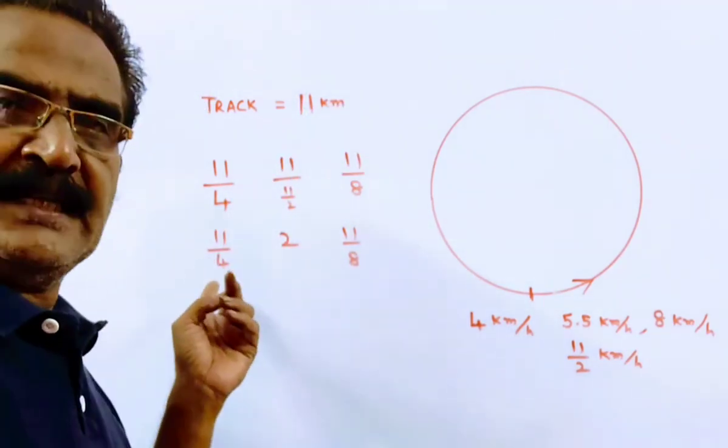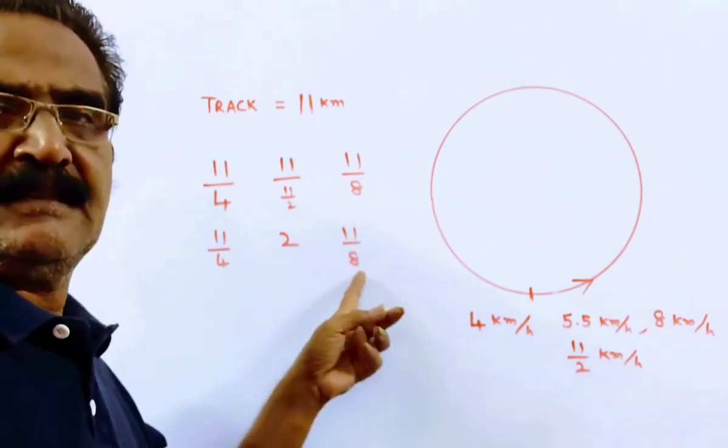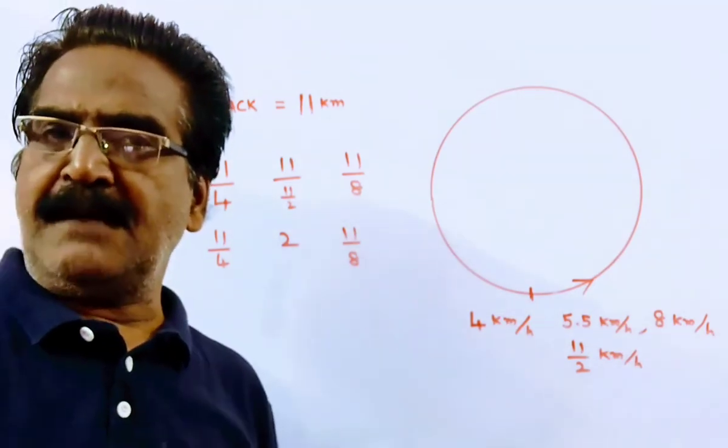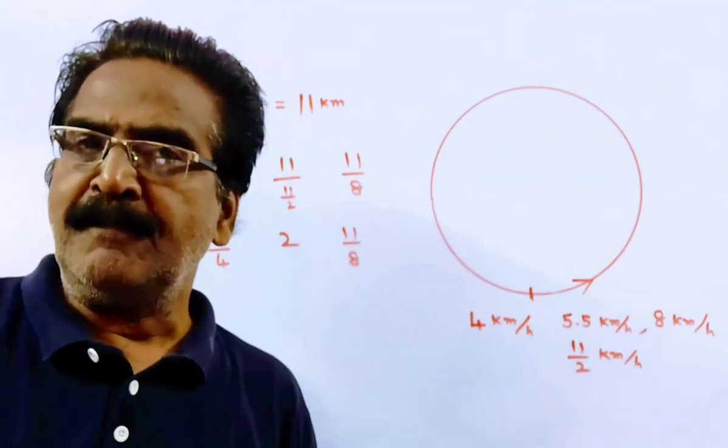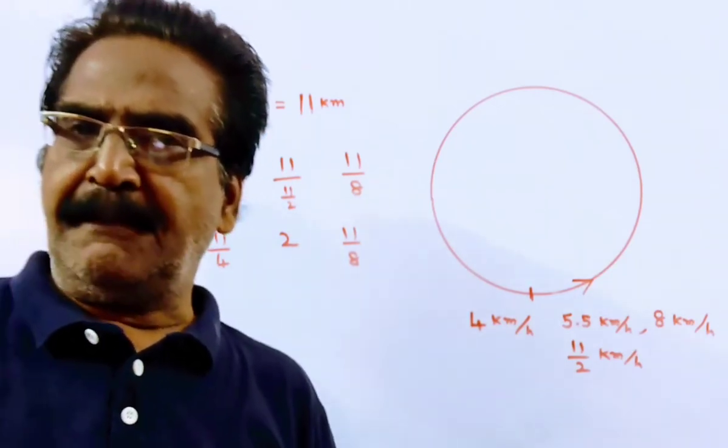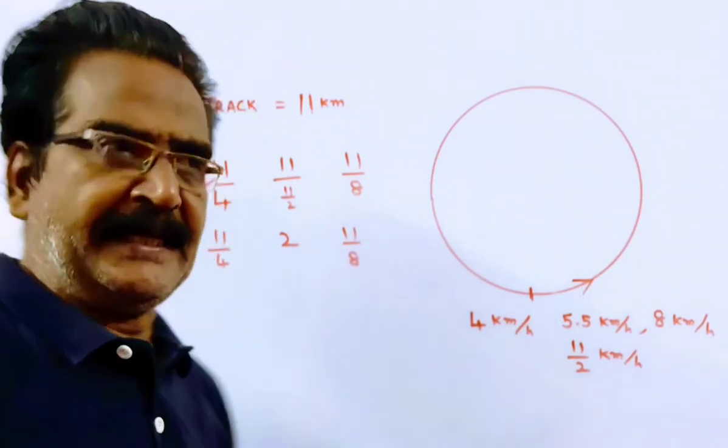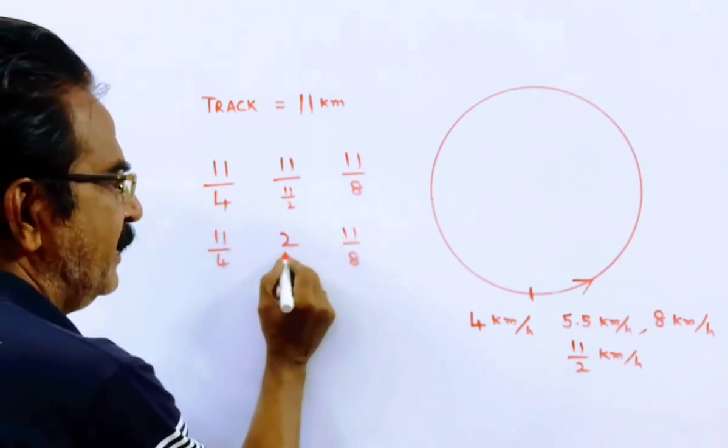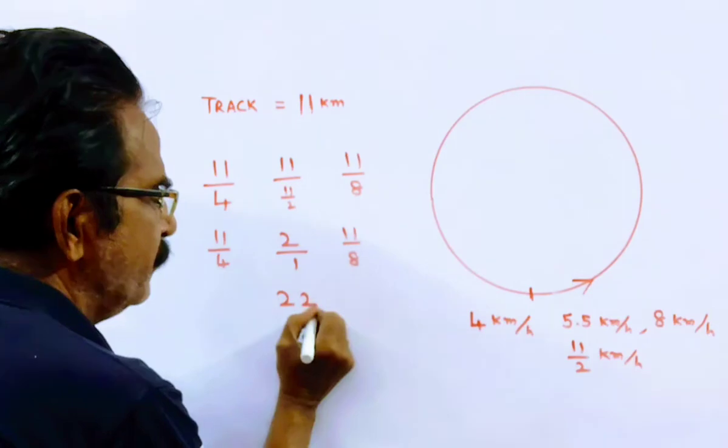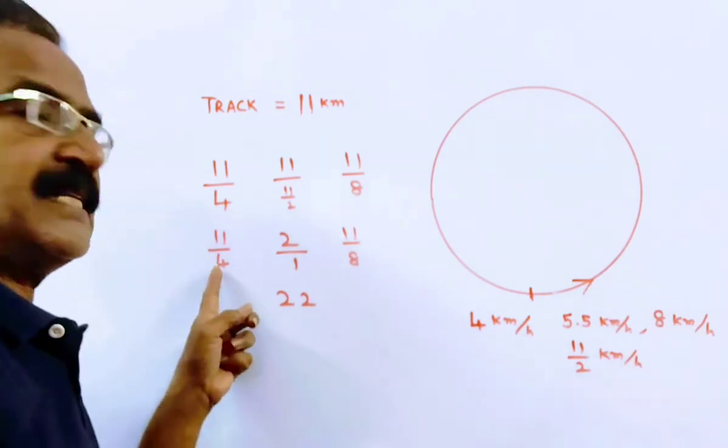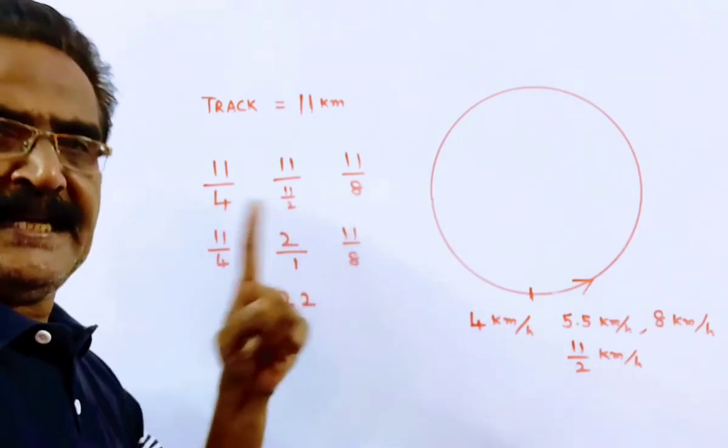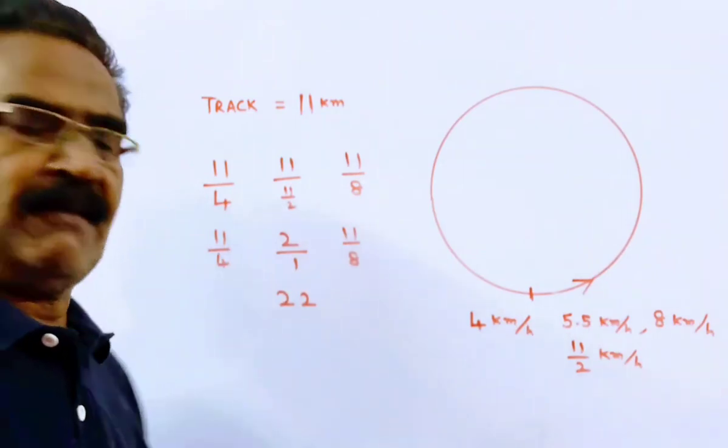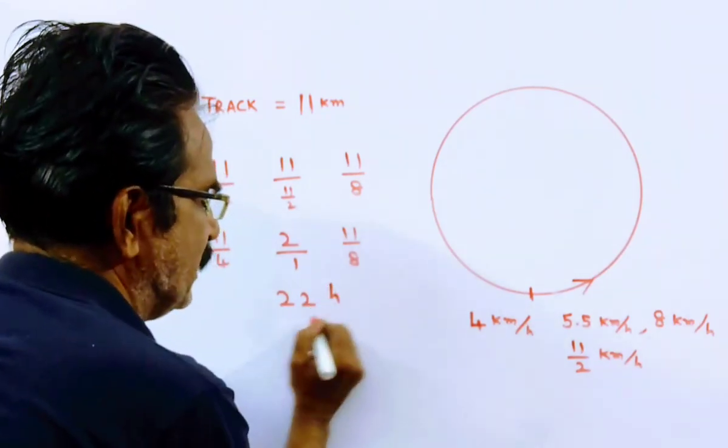Now we have to find the LCM of these three timings. Friends, LCM of fractions is equal to LCM of numerators by HCF of denominators. LCM of numerators 11 and 11, that is 22. HCF of denominators, HCF of 4, 1 and 8 is 1. So 22 by 1, so 22 hours.